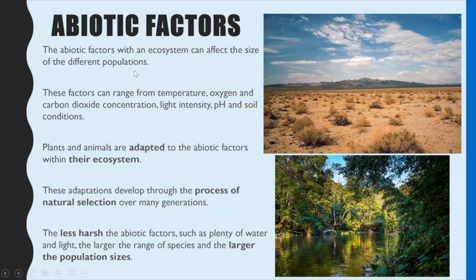Abiotic factors are the non-living components of the ecosystem. For example, that could be temperature and oxygen — particularly important in an aquatic ecosystem, so the amount of oxygen dissolved in the water — and the amount of carbon dioxide in the atmosphere, or again dissolved in water. Also light intensity, pH of soil, and mineral content of soil. Bear in mind it's not sufficient to say 'climate' is an abiotic factor; you'd need to pick out which aspect, because climate could link to precipitation, temperature, or light intensity.